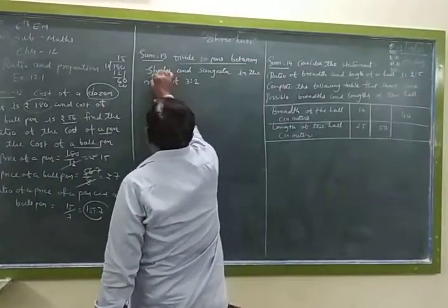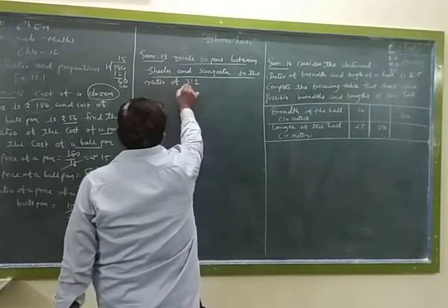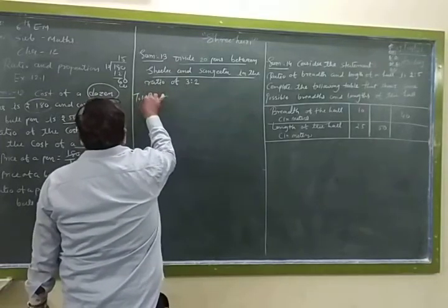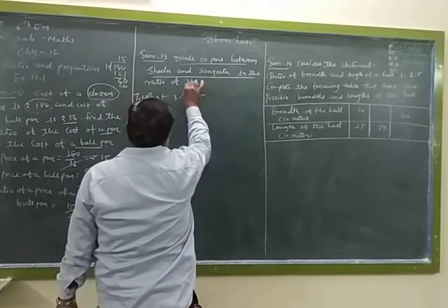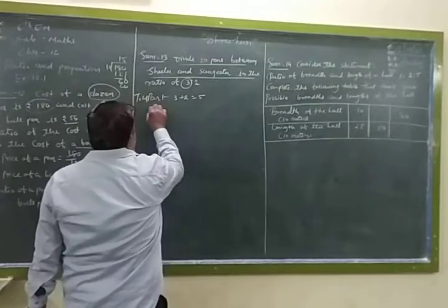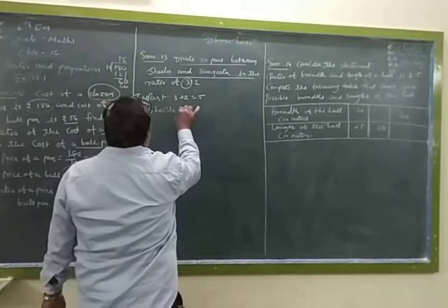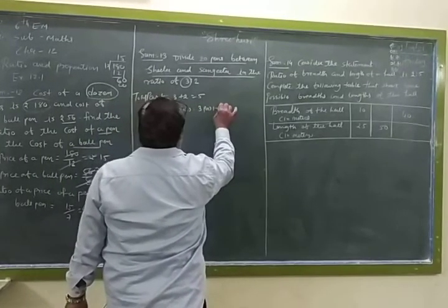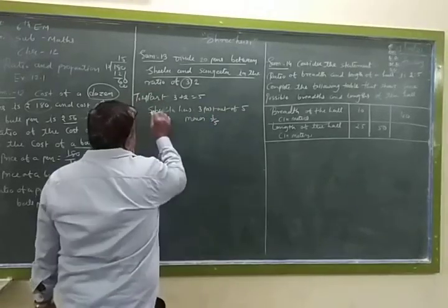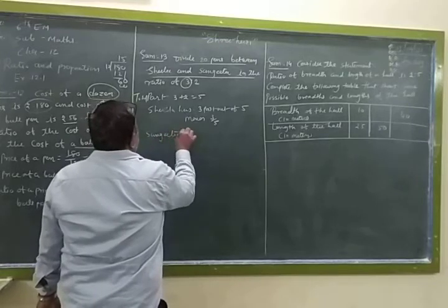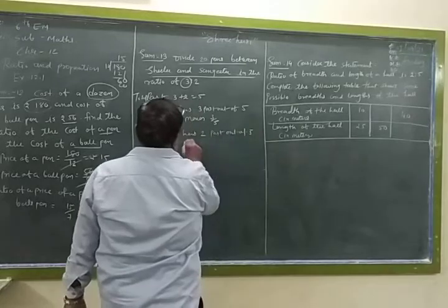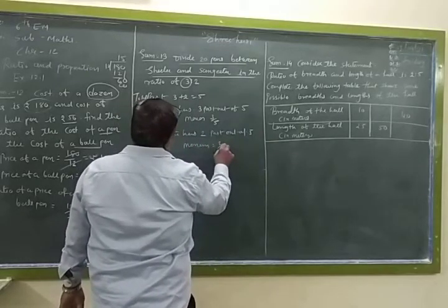Now, divide 20 pens between Sheela and Sangeeta in the ratio of 3 is to 2. So friends, first the part, total part is equal to 3 plus 2 is equal to 5. 3 is to 2 means 3 plus 2 means 5. Sheela and Sangeeta, so Sheela has 3 part out of 5, and Sangeeta has 2 part out of 5.